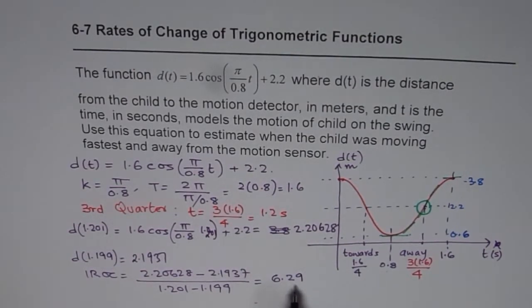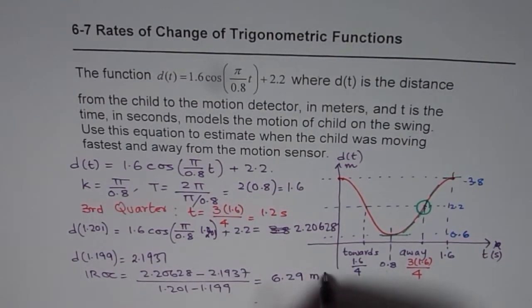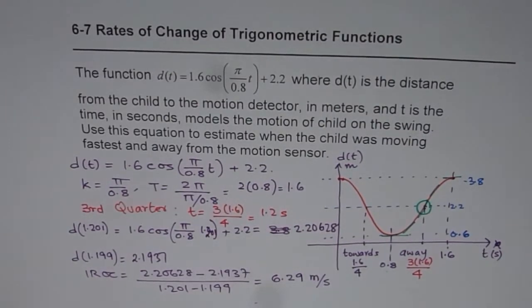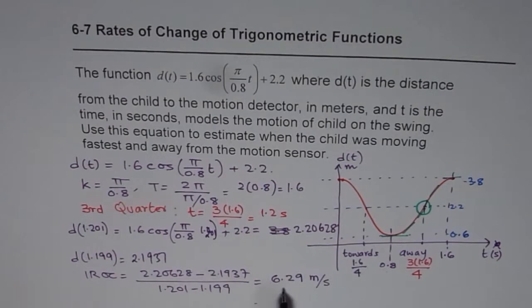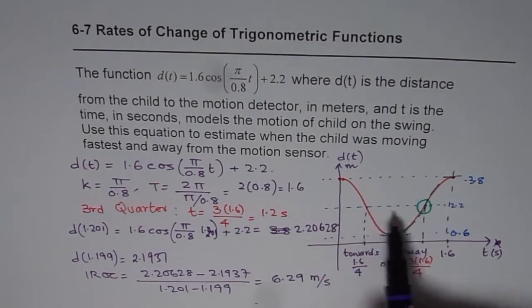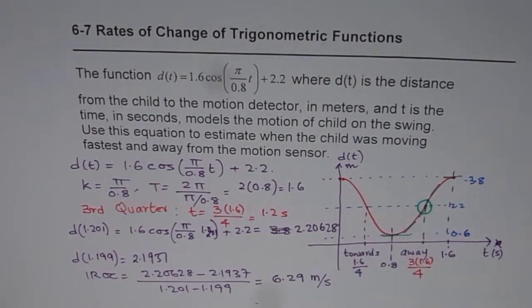So that is the instantaneous rate of change and the units will be meters per second. That is how we can find the maximum instantaneous rate of change. Remember it will be in the third quarter of a cosine function. I hope that helps. Thank you and all the best.